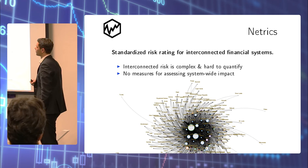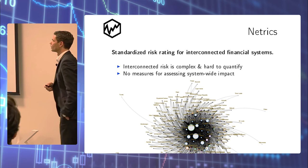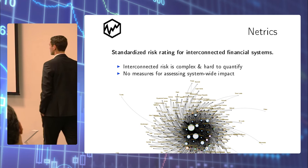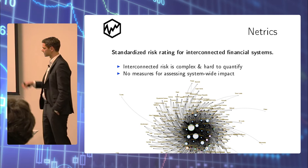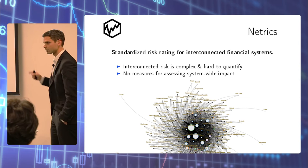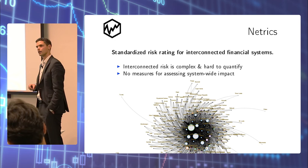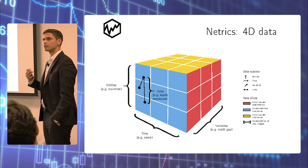With Metrics, our objective is to come up with a standardized risk rating for interconnected financial systems. Interconnected risk in general is complex, hard to quantify, and there is no standard for measuring system-wide impact in interconnected systems. This could be an example where we have banking systems as nodes and linkages across banking systems defined by exposures across the nodes.